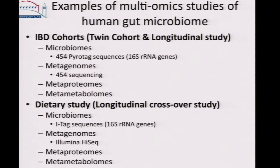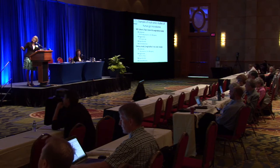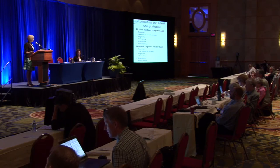That's the background about the omics technologies. Now I'll give a couple of examples of projects where we used multi-omics approaches. The first is for IBD cohorts — we have a twin cohort and also a longitudinal study where we looked at microbiomes, metagenomes, metaproteomes, and metabolomes. The second is a dietary study, also looking at microbiomes, metagenomes, metaproteomes, and metabolomes. The IBD study used the 454 sequencing platform, whereas we migrated to Illumina for the dietary study.